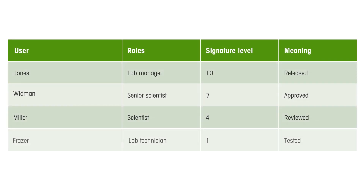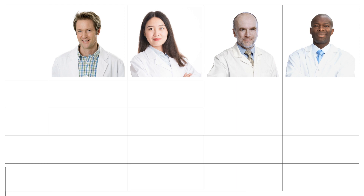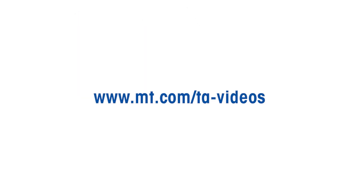Recommended signature levels for different roles are given in the table. Once a user has signed a record, it can only be signed again by another user and with the same signature level or higher. In other words, if Miller signs a record, it can only be signed by Widman or Jones, who have signature levels 7 or 10. Thanks to the User Rights option in STAR-E Software, 30 different privileges and up to 10 signature levels can be allocated as appropriate to an unlimited number of user roles. For more TA-related how-to videos, please go to www.mt.com/TA-videos.